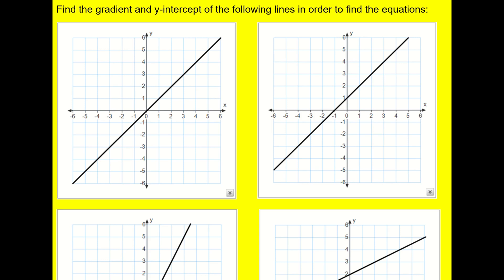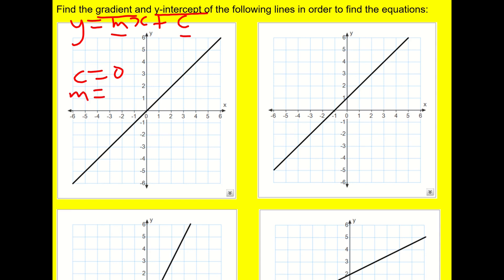Every straight line graph, except one special case I'm going to talk about, can be written in the form y equals mx plus c. This m is the gradient, and this c is the y-intercept. So once you've remembered that, it's not so bad to write down these lines. If I look at the first one on the top left, the y-intercept is equal to zero, because it's where it crosses the y-axis. And the gradient — if I go along one, I go up one — the rise over the run is just one. So the equation of this line is y equals x.